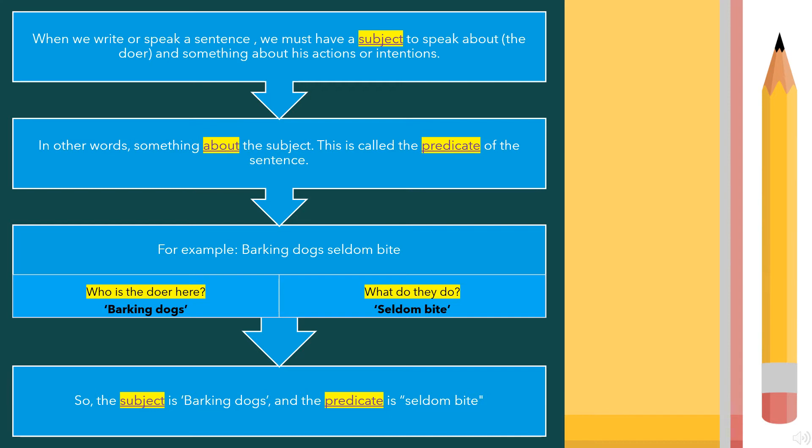When we write or speak a sentence, we must have a subject to speak about, the doer, and something about his actions or intentions. In other words, something about the subject. This is called the predicate of the sentence.